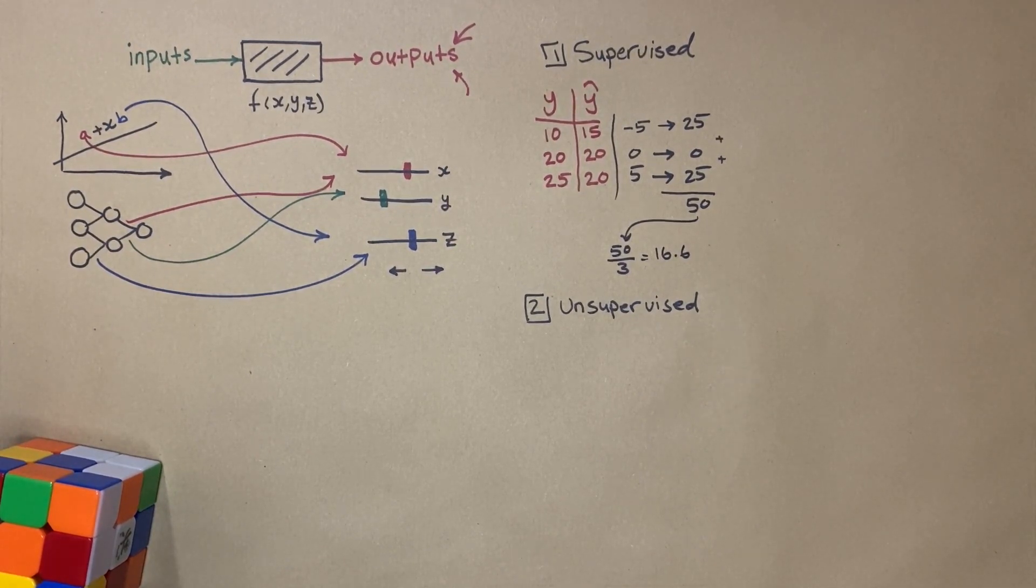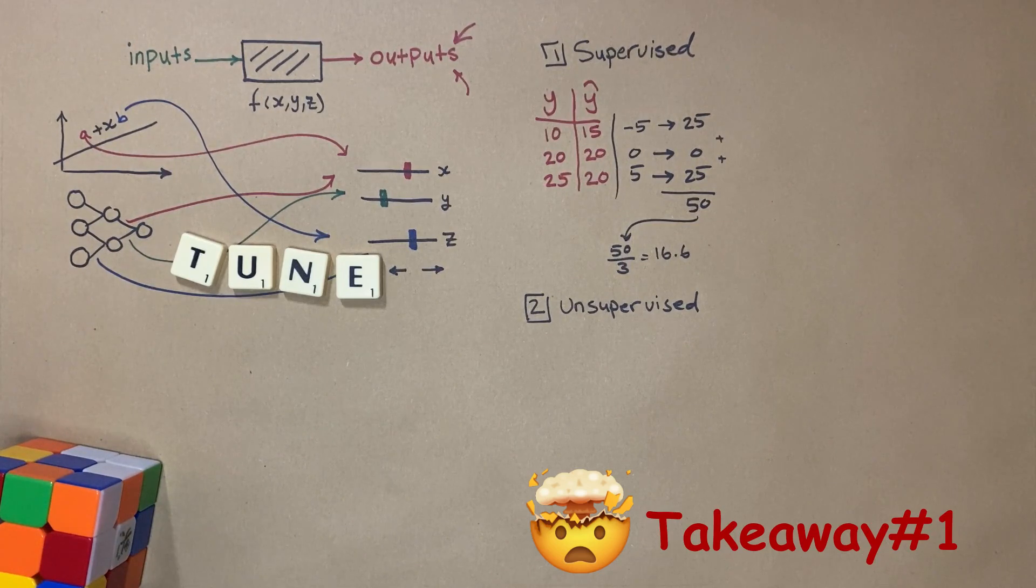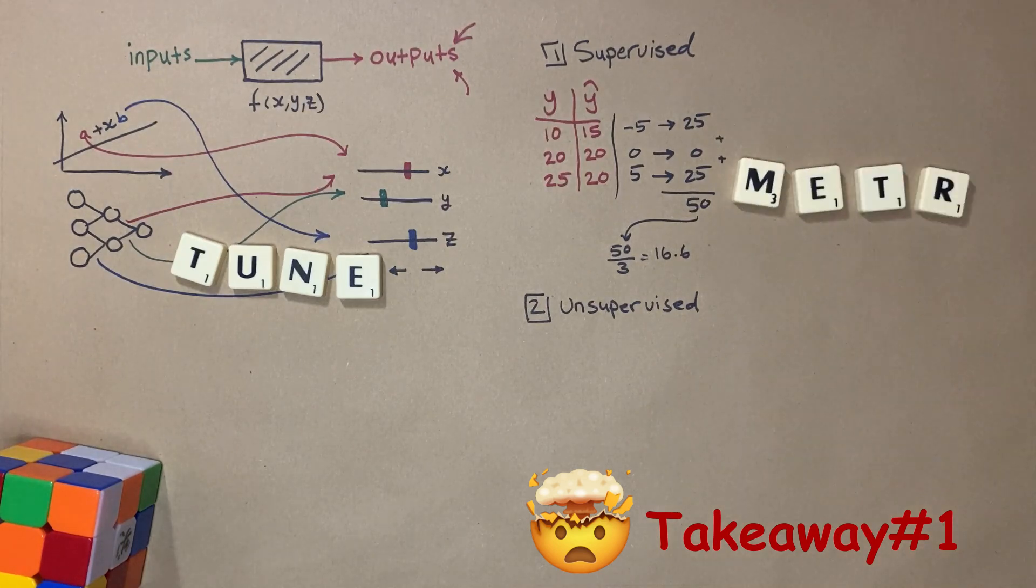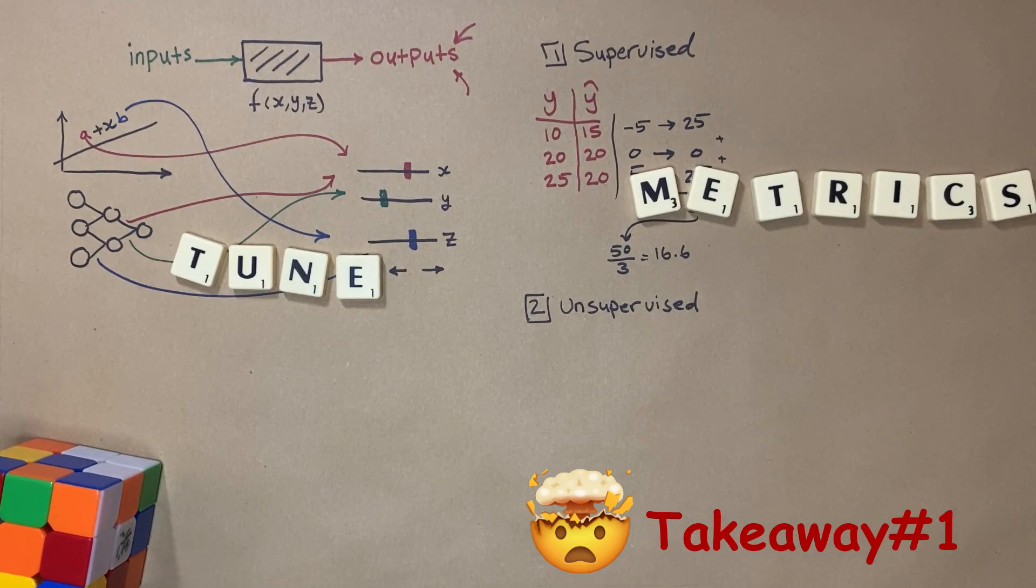This number is also called a metric. So the first takeaway here is that we need to tune these parameters to get the best value of our metrics. Oh, we run out of space here. Let's push them to the left. Even more. That's better.